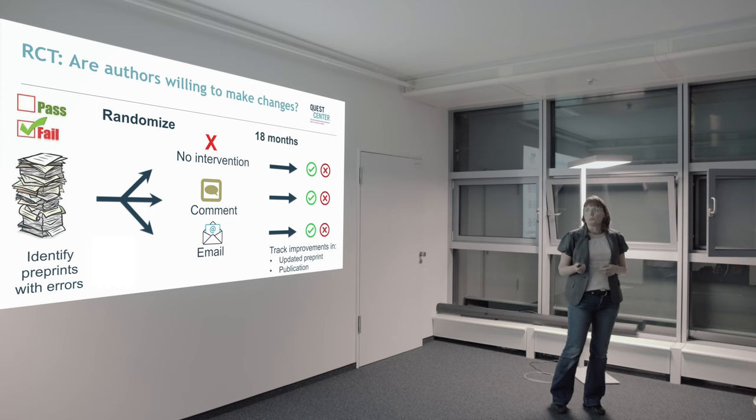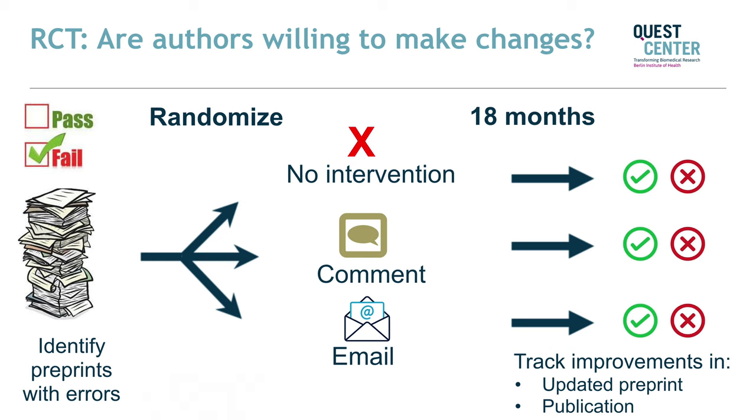So what we want to do is first test out these tools to see do they work. If we identify a bunch of preprints that have errors, and then we randomize them to either no intervention, so they have an error but we do nothing, to a comment posted on bioRxiv, or to an email intervention sent to the authors, where we do the same message both places, and then we follow them for 18 months, what happens?